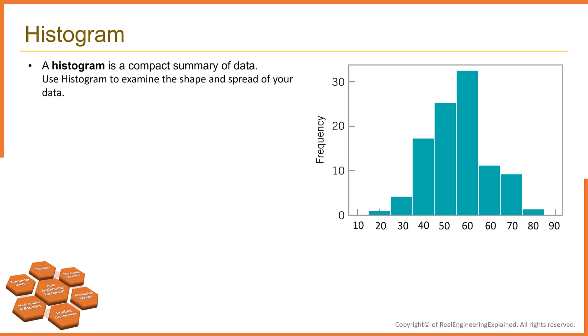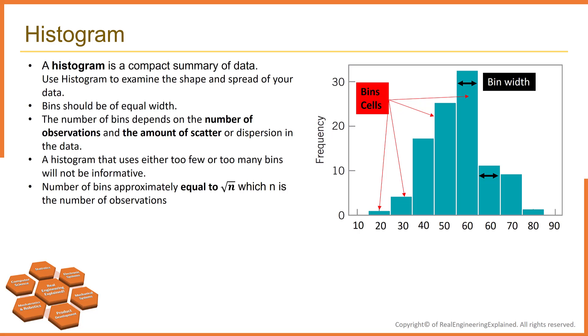What is the histogram? A histogram is a compact summary of data. Use histogram to examine the shape and spread of your data. To construct a histogram for continuous data, we must divide the range of the data into intervals, which are usually called cells or bins. If possible, the bins should have equal widths to enhance the visual information. Some judgment must be used in selecting the number of bins so that a reasonable display can be developed. The number of bins depends on the number of observations and the amount of scatter or dispersion in the data. A histogram that uses either too few or too many bins will not be informative.